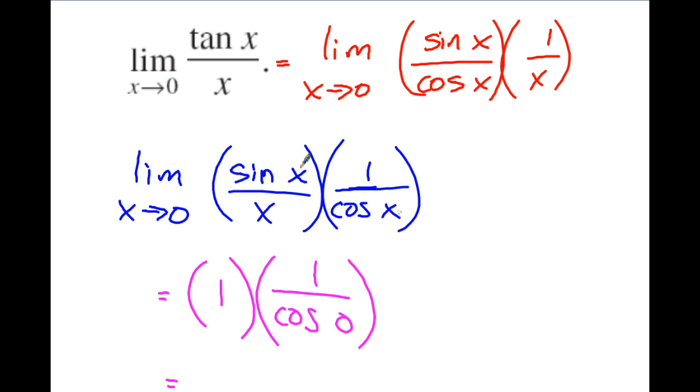And then 1 over cosine x, if you plug in 0, you can use direct substitution there. And the cosine of 0 is 1. So therefore, you're going to get 1 times 1 over 1 or 1 times 1, which will give us an answer of 1.